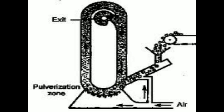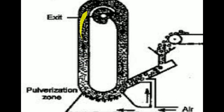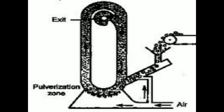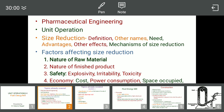The particles, having tangential motion, enter and follow this path. During this journey, both impact and attrition take place. Once reduced in size, they enter the outlet area. Those with larger size, due to their own gravity, settle down and are again recycled by the air coming through. That is how the fluid energy mill works.